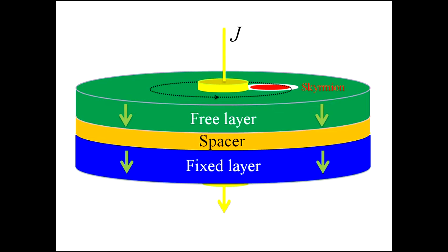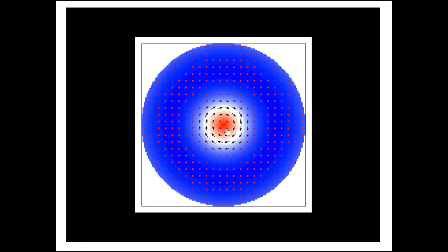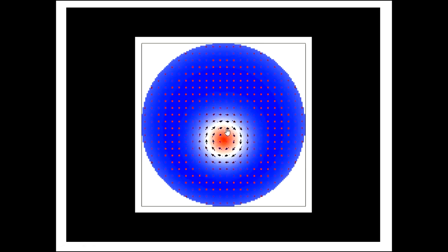Finally, the skyrmion reaches a persistent oscillation around the injection site of the current, just like this video. The oscillation frequency is about gigahertz.